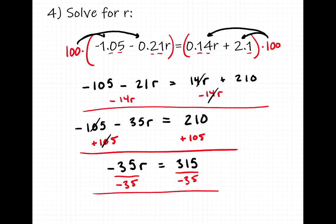On the left, the times negative 35, the divide by negative 35, they cancel. So we're left with just r. And on the right, 315 divided by negative 35. You could use a calculator for that if you prefer, and that will give us negative 9. So the answer to this equation, r equals negative 9.